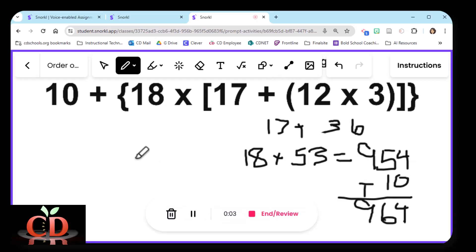So here's how I solved this problem. First, I took 12 times 3 is equal to 36. Then I added 17. 17 plus 36 is 53. Once I have my 53, then I multiplied it by 18. 18 times 53 is 954. Then the final step is to add 10. And that then equals 964. That's my final answer, starting from the inner parentheses and moving my way up.